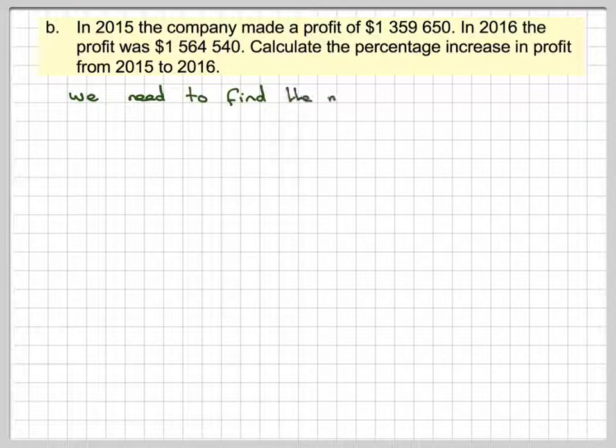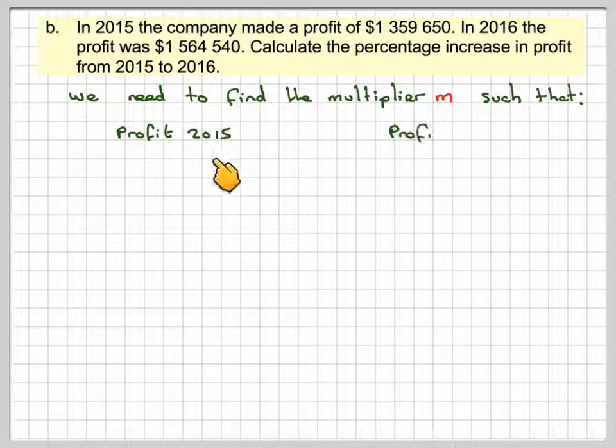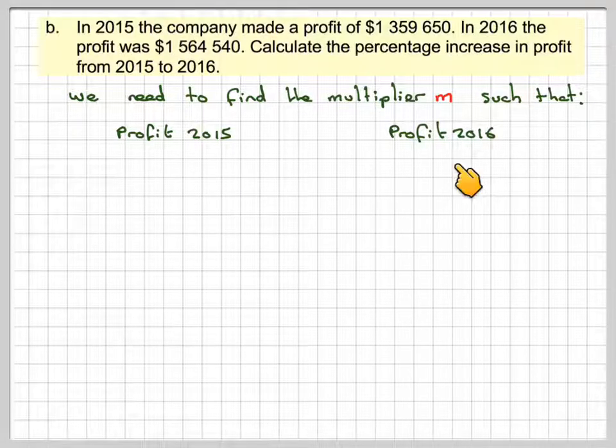So, what we need to do is find a multiplier, M, such that, if we're laying it out properly, we've got the profit 2015 to profit 2016.